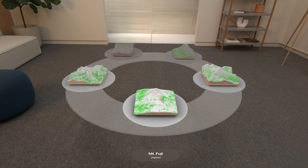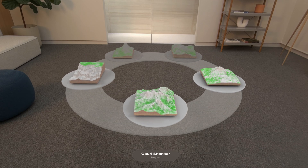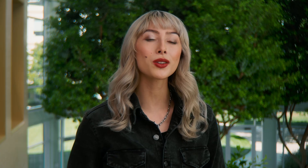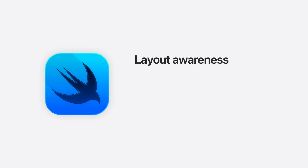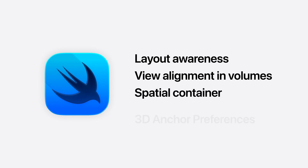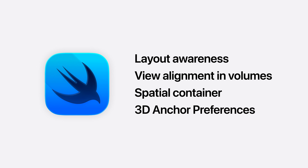Enhancements across new and existing SwiftUI APIs make it even easier to build compelling volumetric experiences. You can create even richer 3D layouts in the same familiar way as 2D UI. Layouts are now aware of visual effects like rotation. Existing APIs allow you to easily align your views within volumes. You can align overlapping content in the same 3D space with Spatial Container, or anchor content to specific locations with 3D anchor preferences, all in SwiftUI.